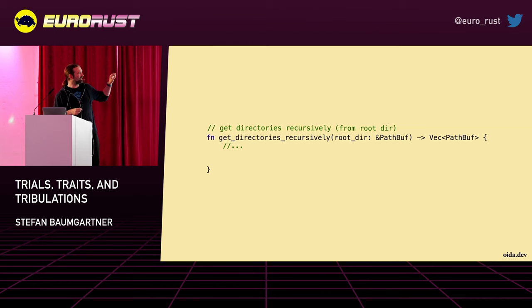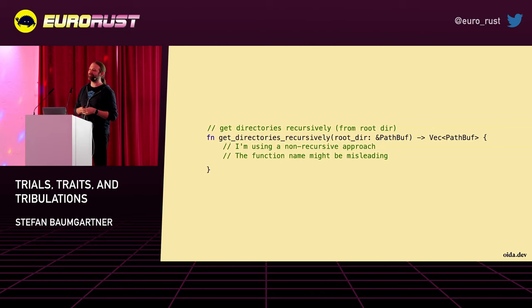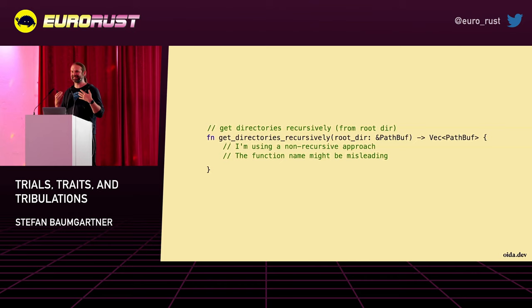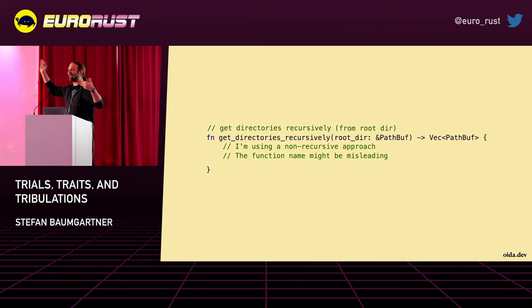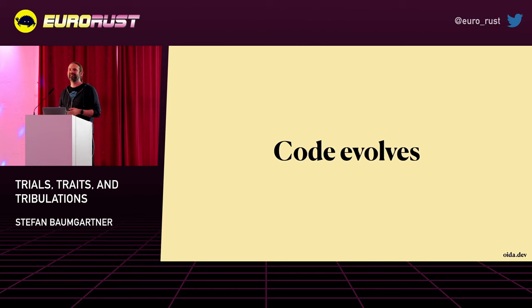But what's even more interesting than the comment above the function is the comment below the function: 'I'm using a non-recursive approach. The function name might be misleading.' So close. It's easy to laugh about it, but please don't make fun of it because it's actually cute. I guess we've all been at the point where we looked at code we're writing and realized we are aiming for something entirely different than we started out. Code is evolving and this is a good thing. We start out with something totally different and end up further down the road with what we were actually aiming for.